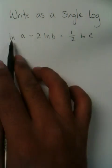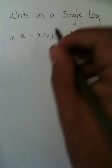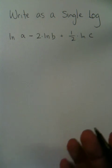Writing as a single log, again, is basically the opposite of expanding the log. So you look at your answers and you say, okay, here I have a 2 being multiplied by a log, I have a 1 half being multiplied by a log. You don't want any numbers in front of log when you're trying to make one single log.